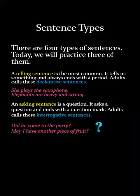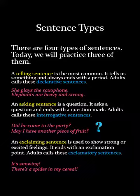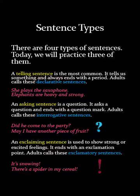Finally, an exclaiming sentence is used to show strong or excited feelings. It ends with an exclamation point. Adults call these exclamatory sentences. So 'It's snowing!' or 'There's a spider in my cereal!' — see how I sound excited? Those are your exclaiming sentences. Those are the three types. Don't worry about the fourth type; we'll talk about that a little later.